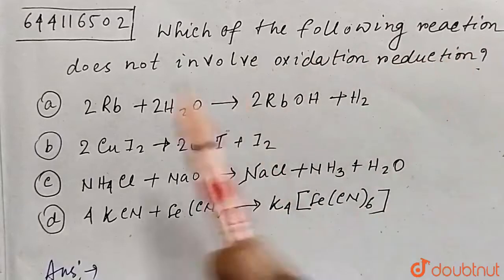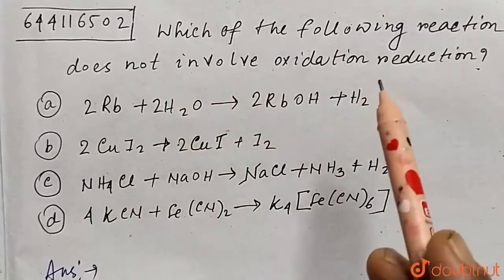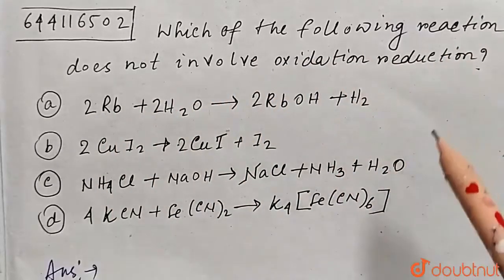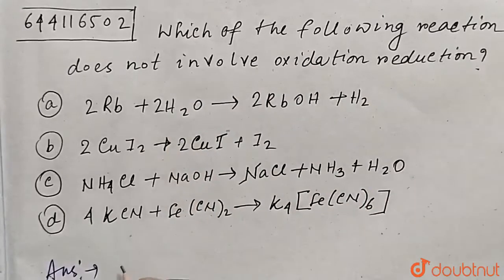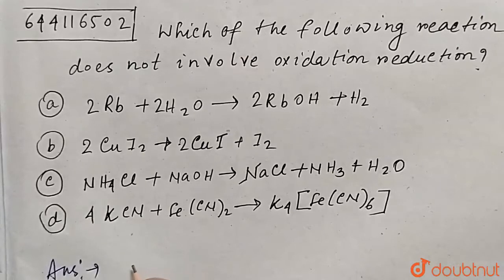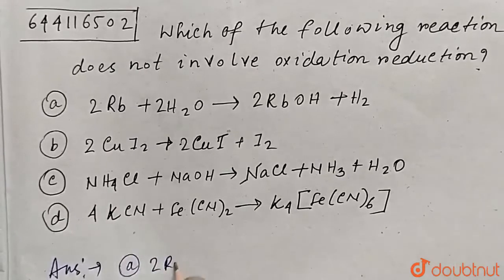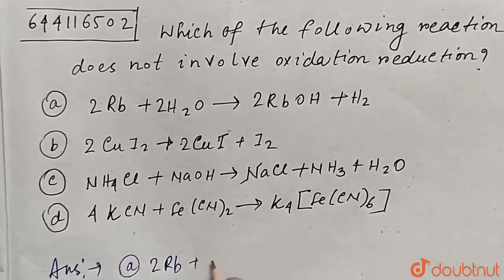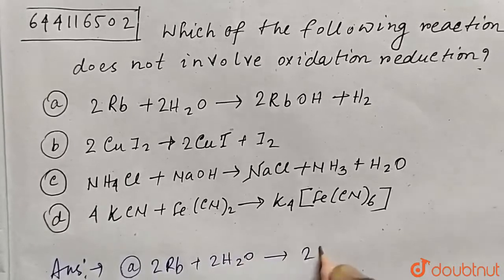The question given is: which of the following reactions does not involve oxidation-reduction? Four reactions are given and we have to determine which one is not an oxidation-reduction, that is, a redox reaction. We will start from reaction A: 2Rb + 2H₂O → 2RbOH + H₂.